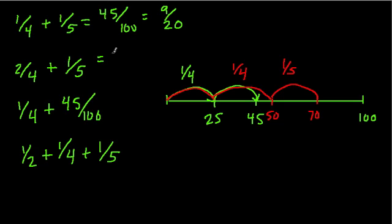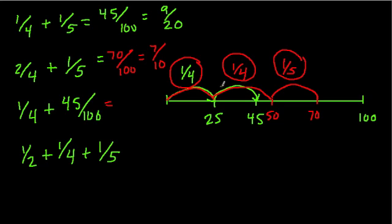So here, we could say we have 70 out of 100, or 7 tenths. And again, all I'm doing there is, here's the actual equation. I broke 2 fourths into 2 separate fourths and a fifth, added them all up, and that brought me to my answer.